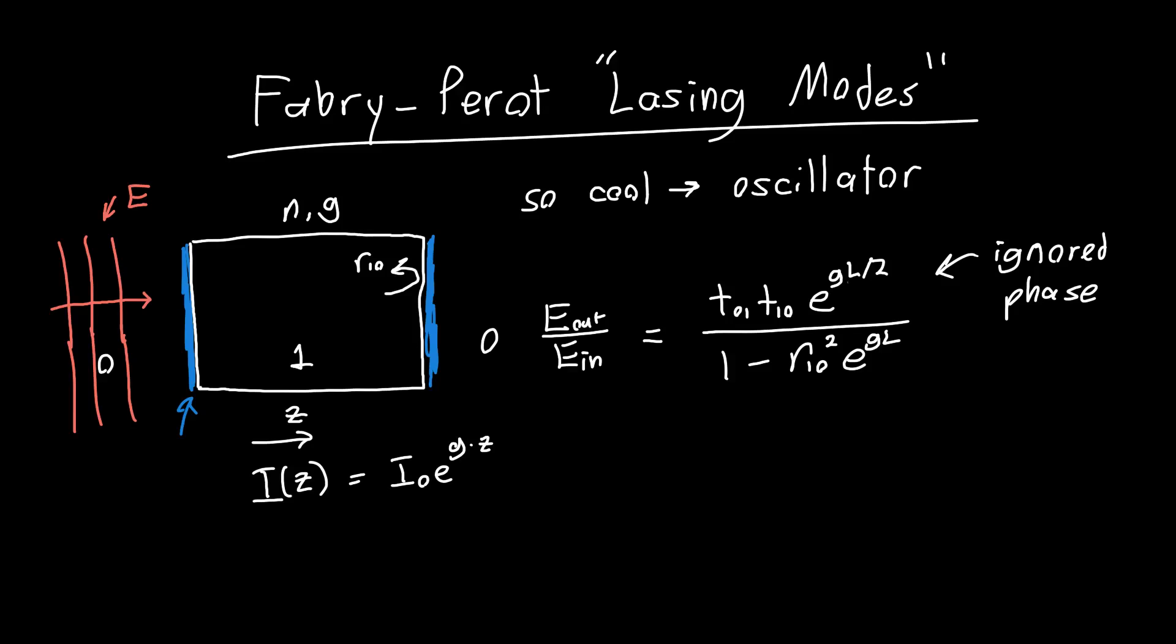But it's fairly simple to add on if you've already added this gain term. The phase similarly accumulates as you propagate down this structure. And just as the gain from this end to this end was g times l over 2, the total phase is just the wave number inside the material, k, times the length.